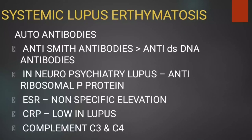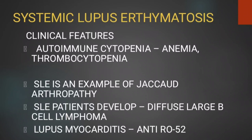The clinical features presented by patients of systemic lupus erythematosus include fever, fatigue, weight loss, malar rash, alopecia (hair loss), mucosal ulcers, arthritis or arthralgia, serositis, glomerulonephritis, neuropsychiatric manifestations like depression, psychosis, and peripheral neuropathy, and autoimmune cytopenia conditions like anemia and thrombocytopenia.